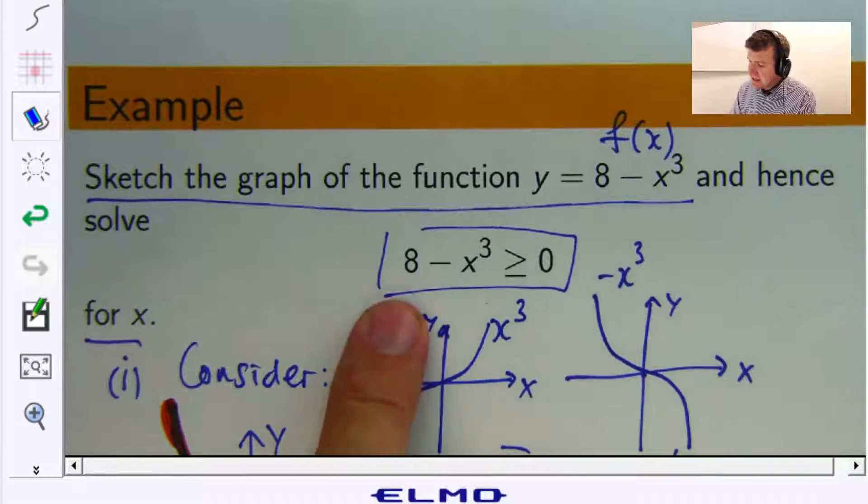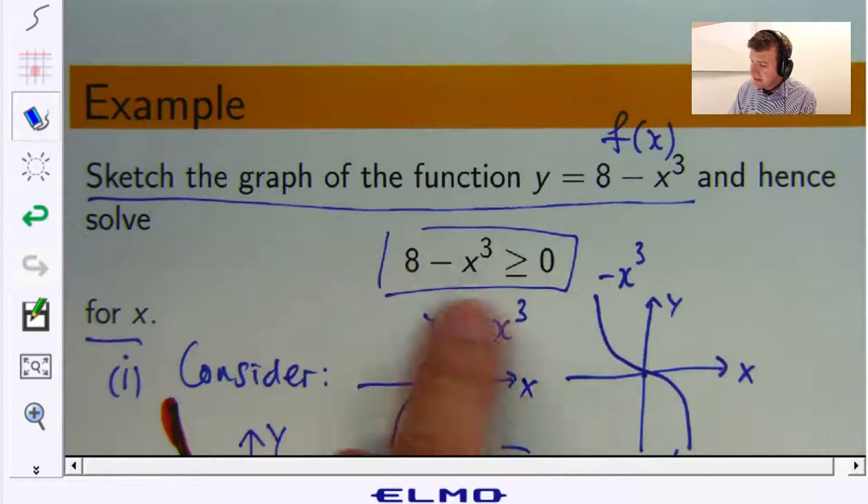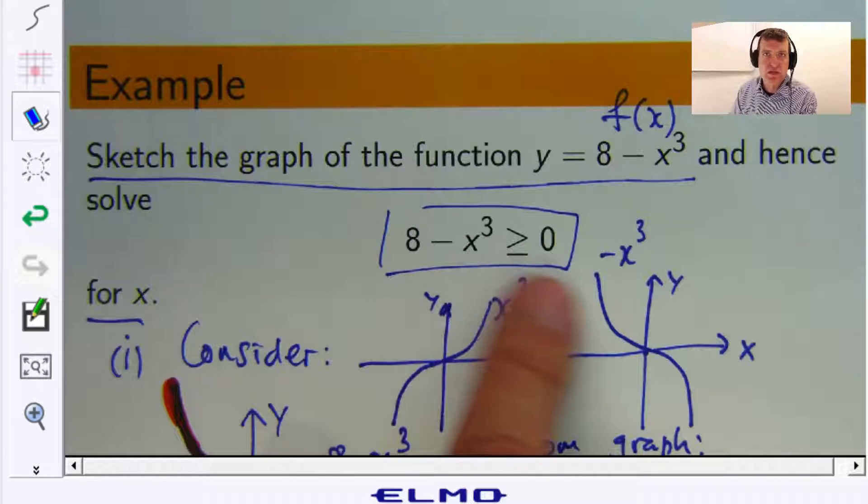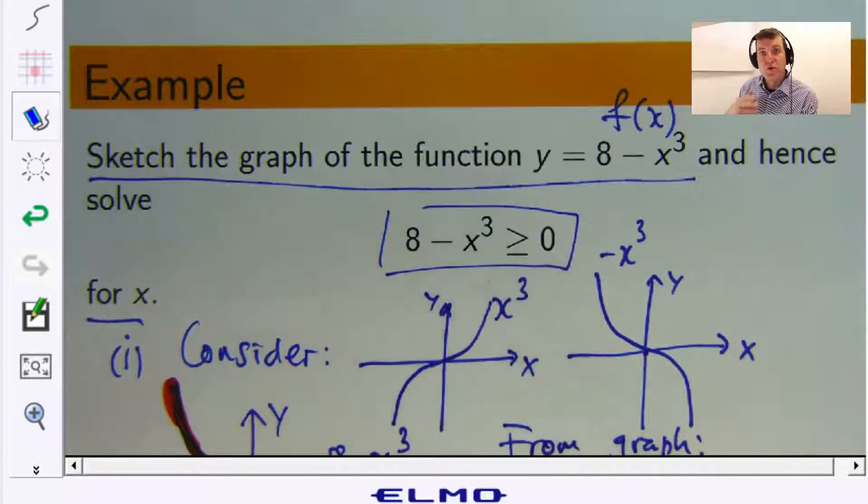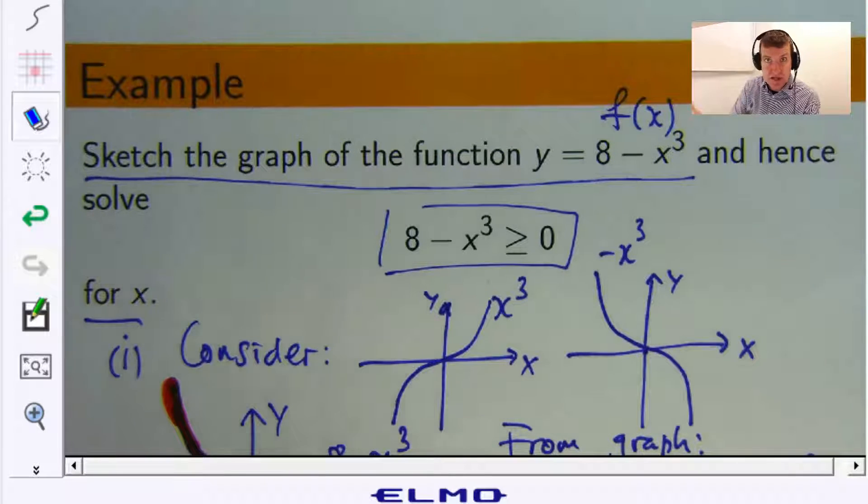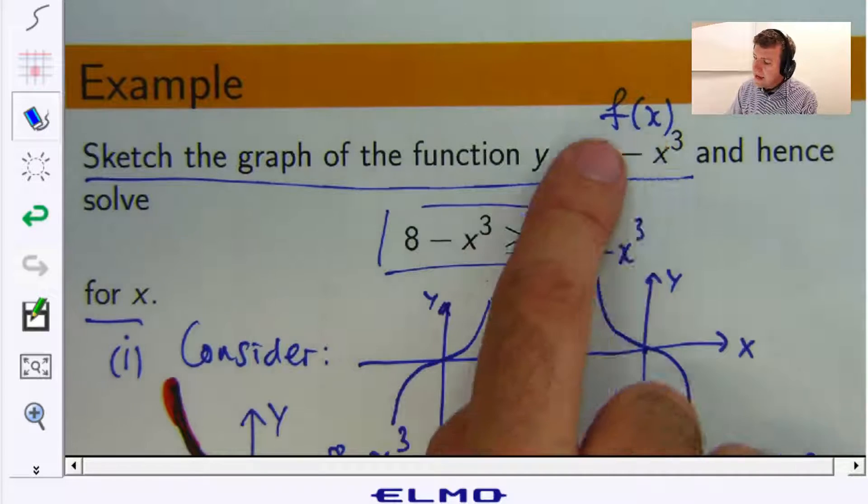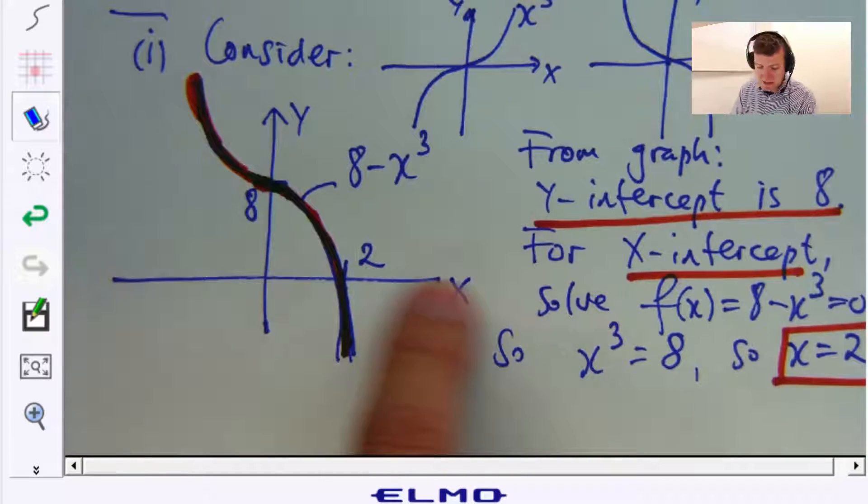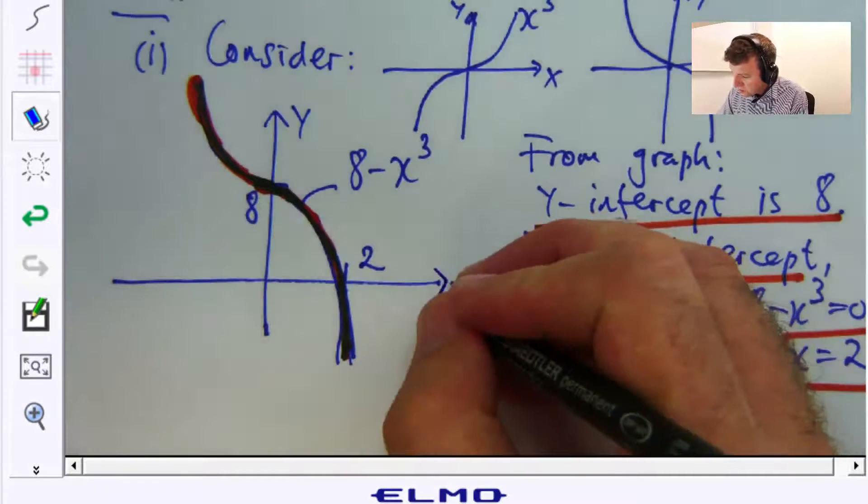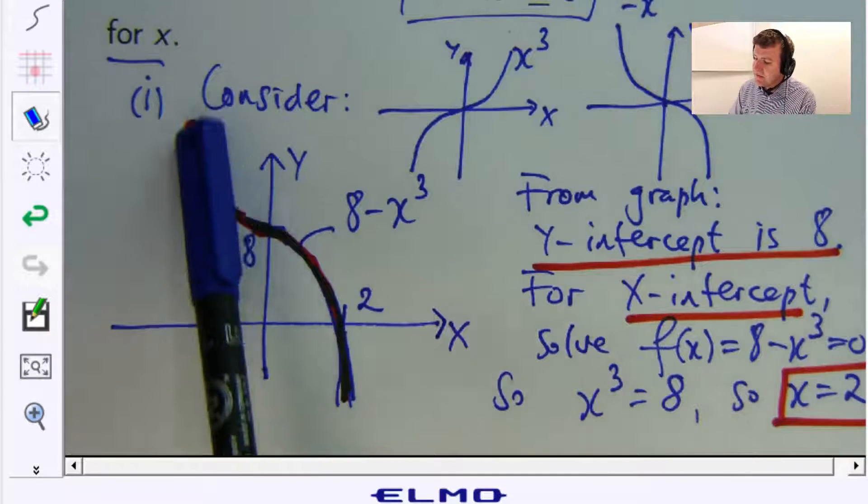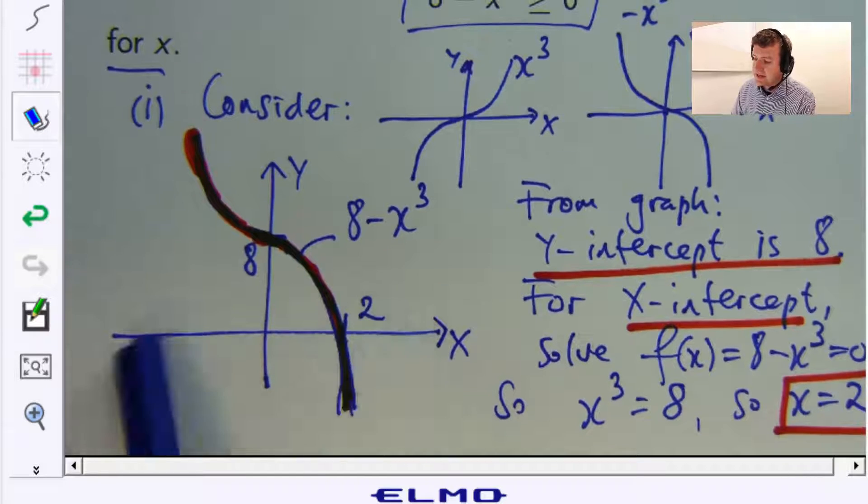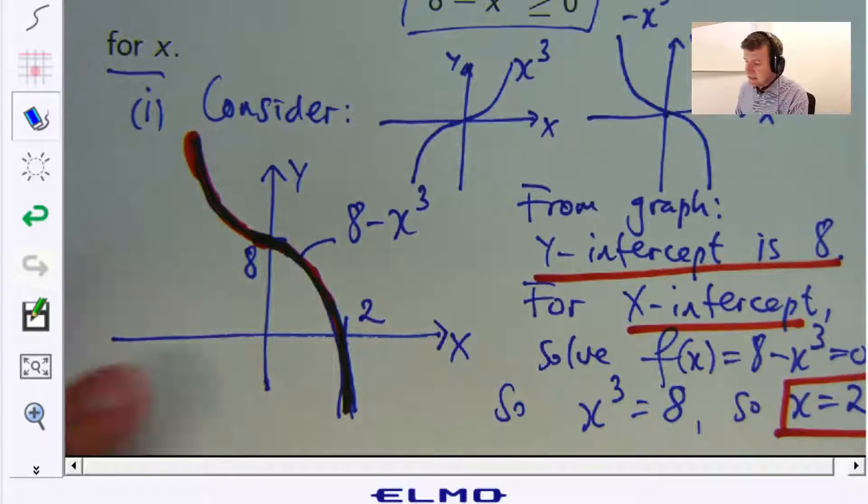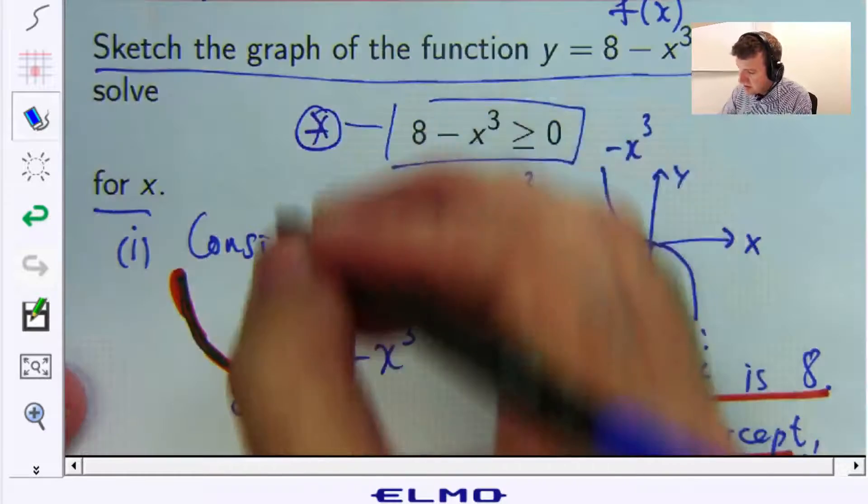Great! The second part is to solve this inequality. Where is this 8 minus x cubed greater than or equal to 0? So what the question is really asking us visually or graphically is where does the function lie on or above the x-axis? So here's the x-axis. Where does the graph lie above or on the x-axis? And what are the x points associated with that? That's all it's asking. So let's call this inequality star.